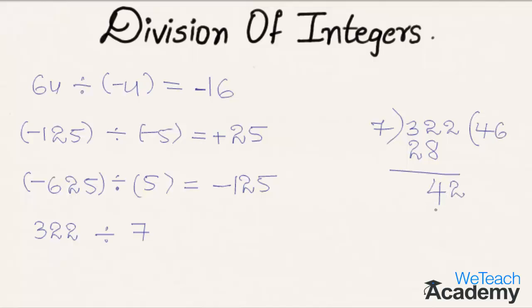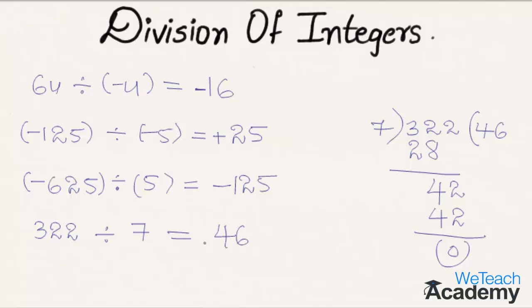7 six times is 42, so 42 minus 42 is 0. We get the result as 46. The signs are the same, so we get the result as positive: 46.